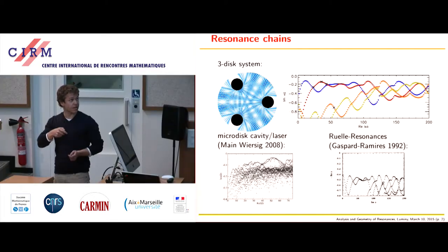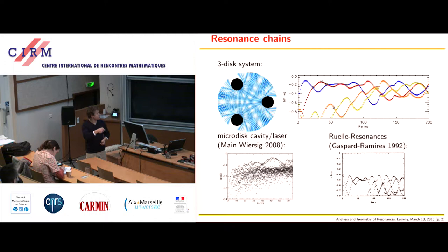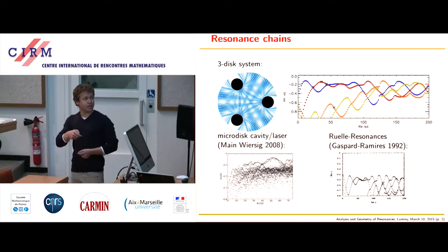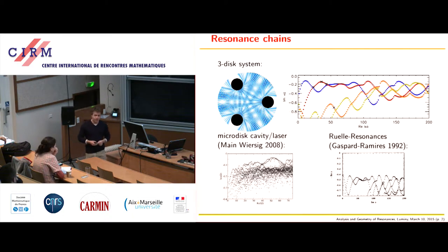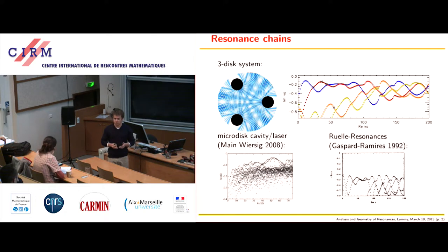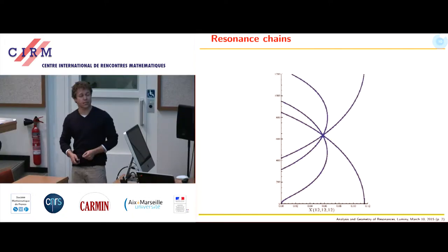This is a picture taken from an article by Wiersig, calculating resonances of so-called micro-disk cavities. These cavities are important because you can build tiny lasers out of them, and if you want to tailor these lasers appropriately, you need to understand the resonance structure. Throughout this talk I will not talk about these physical examples, because the tools needed to understand these resonance chains are from a mathematical point of view not well established. So I will only talk about the Schottky surface case.